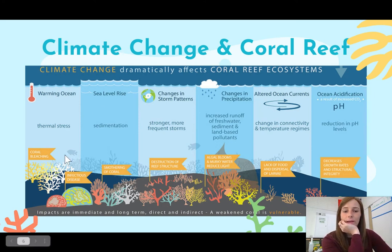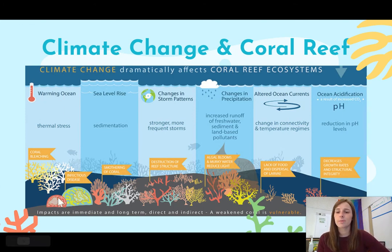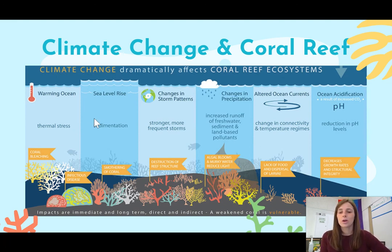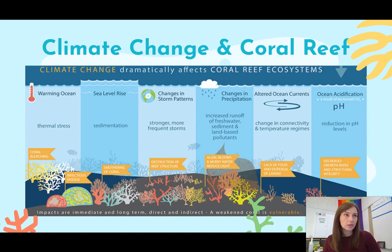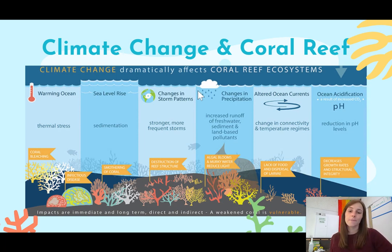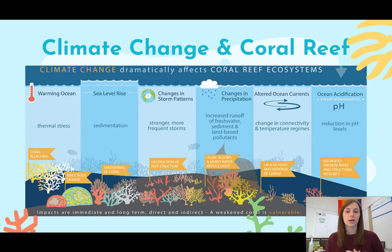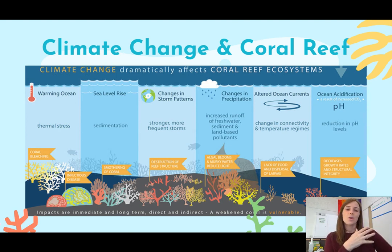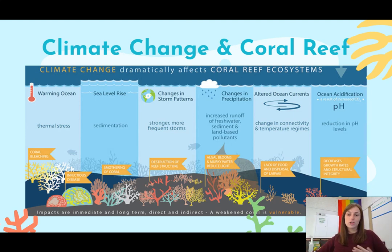This diagram shows all the things that can impact coral reefs. We've discussed thermal stress and pollution, but also sedimentation and sea level rise can smother coral. Changes in storm patterns due to thermohaline circulation issues can destroy reef structures. Increased freshwater runoff creates murky, non-ideal water conditions. Ocean acidification from carbon dioxide — which we'll cover in our next set of notes — lowers pH and impacts the structural integrity of coral. So beyond just coral bleaching, there are many climate change-related threats to coral reefs.